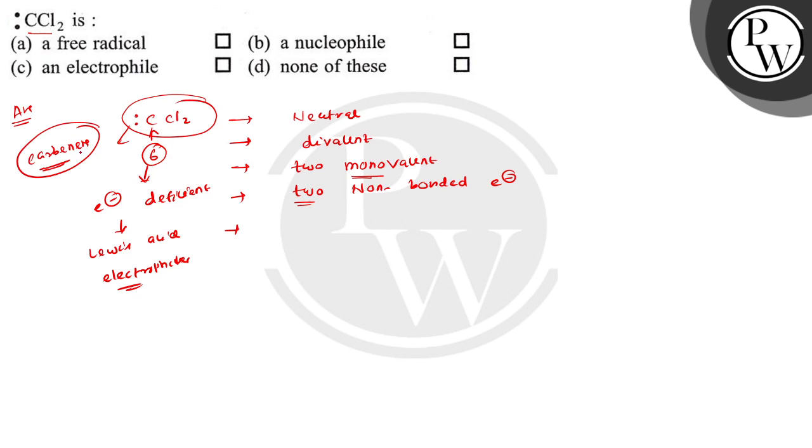These are electrophiles but not free radicals. Free radicals are when the carbon contains one unpaired or odd electron, like methyl free radical, where it contains one odd electron or unpaired electron. But here there are two non-bonded electrons, and these are carbenes, electrophiles, Lewis acids, but not free radicals.